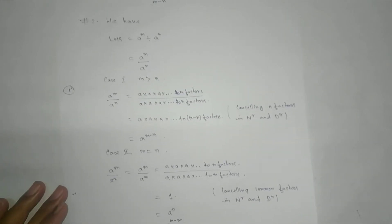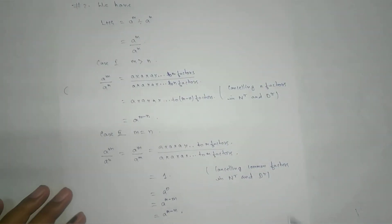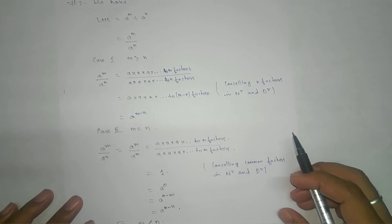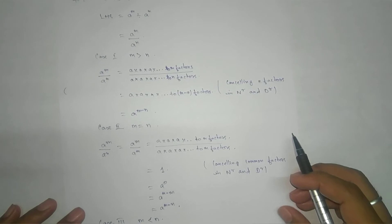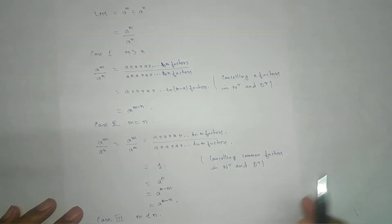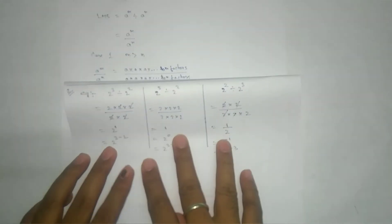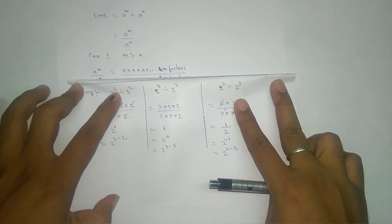Now for the second law: a to the power m divided by a to the power n. For division there are three cases. Case one: when m is greater than n, meaning the numerator exponent is greater than the denominator exponent. In this case we cancel n factors in the numerator and denominator. By looking at the example we can understand this better.